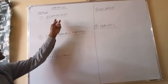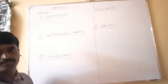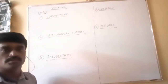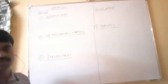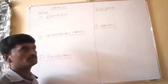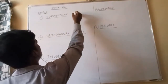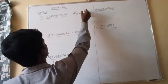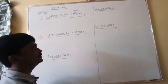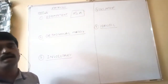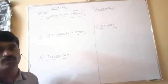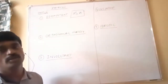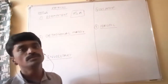First definition: idempotent matrix. A square matrix A is said to be an idempotent matrix if A squared is equal to A. If A squared equals A, then A is an idempotent matrix.